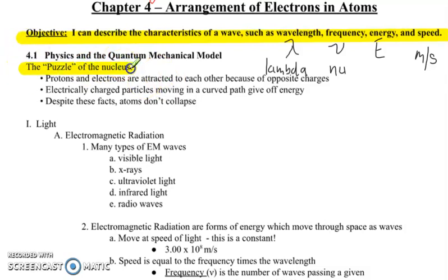Looking at the puzzle of the nucleus, protons and electrons are attracted to each other because of opposite charges. Electrically charged particles moving in a curved path give off energy. That means all the electrons should go spiraling down to the nucleus and completely obliterate themselves. Despite these facts, atoms don't collapse. Rutherford knew his mathematical model wasn't correct. It was eventually resolved by his student Bohr.